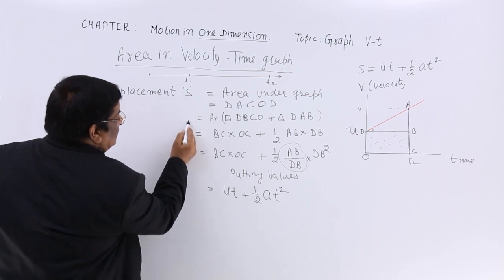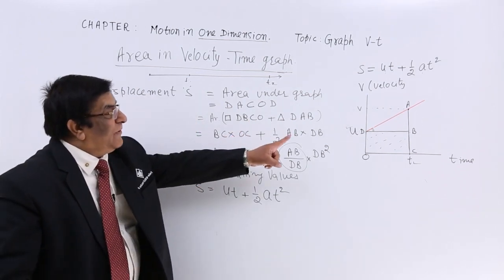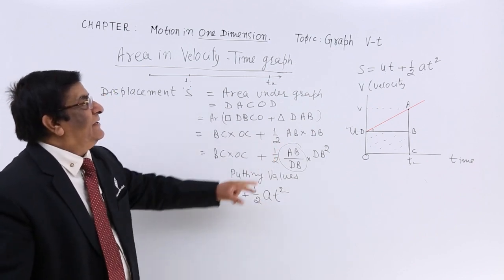What is this? S. So with the help of graph, what we have proved? S is equal to ut plus half at square.